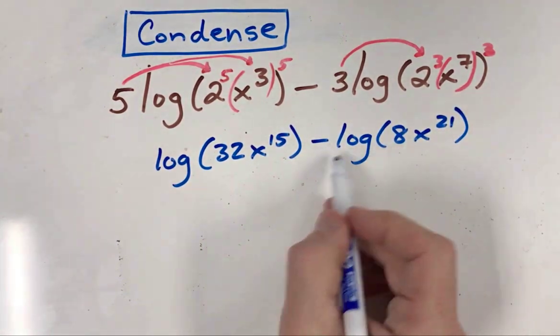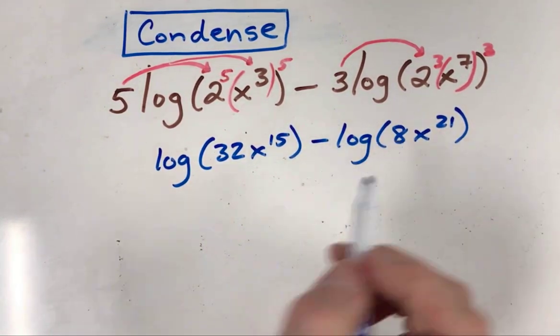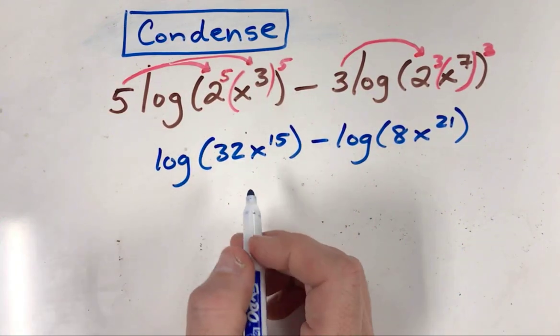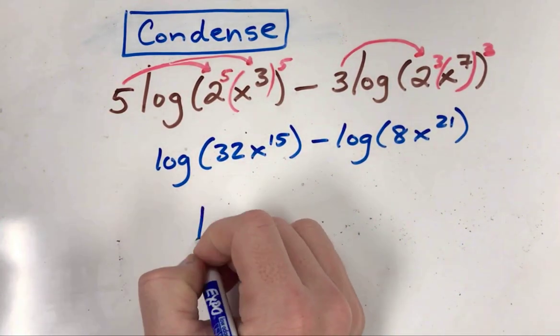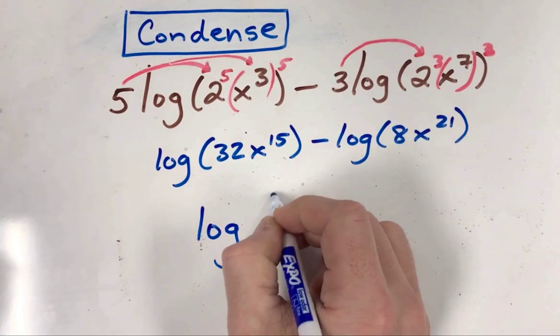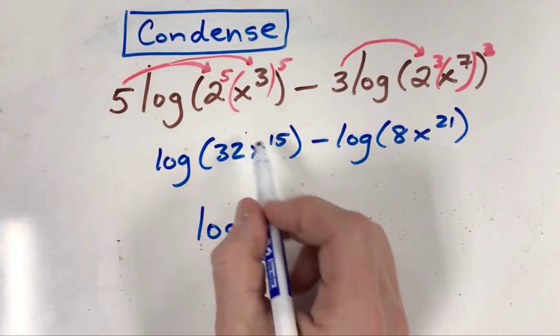When you have subtraction, negative logs go in the denominator of the fraction, positive logs in the numerator. To write this as one condensed log, we make parentheses and place these things in the proper locations.